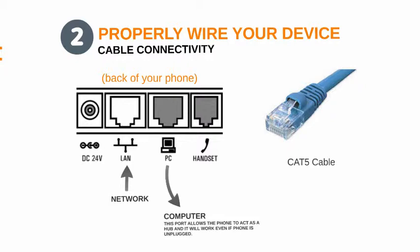The handset is a smaller jack. You'll notice it only fits the very small RJ11 connection, which is basically that squiggly phone cord that goes to your handset. That's where you'll plug in your handset when you first unbox your phone.